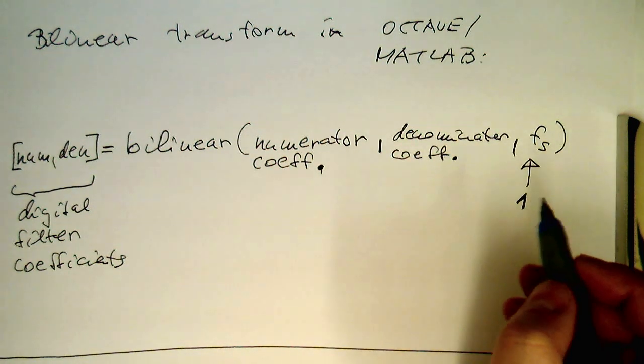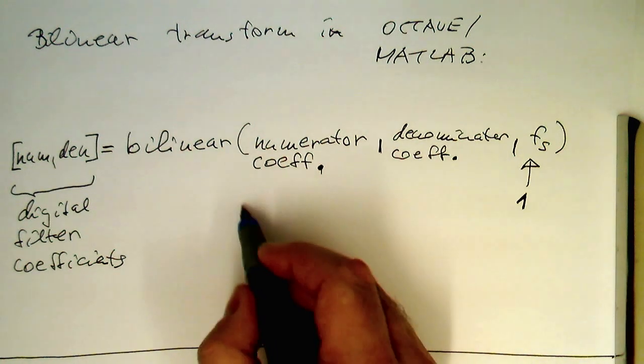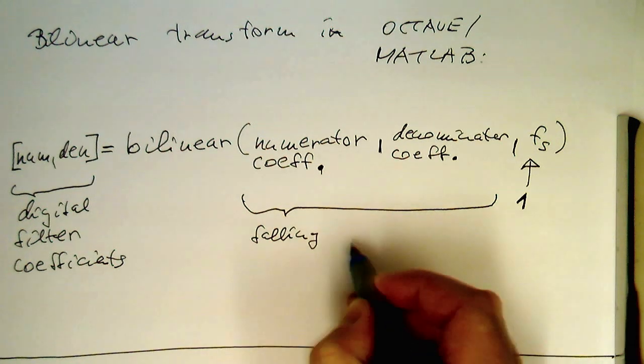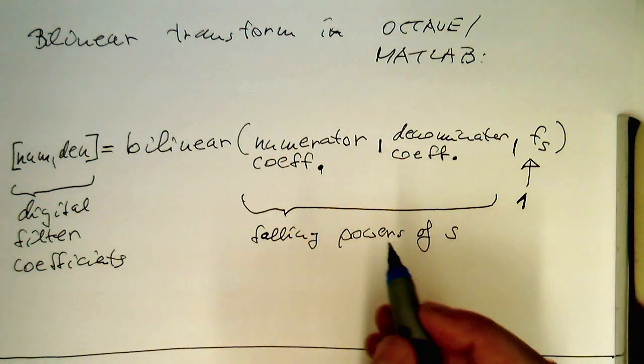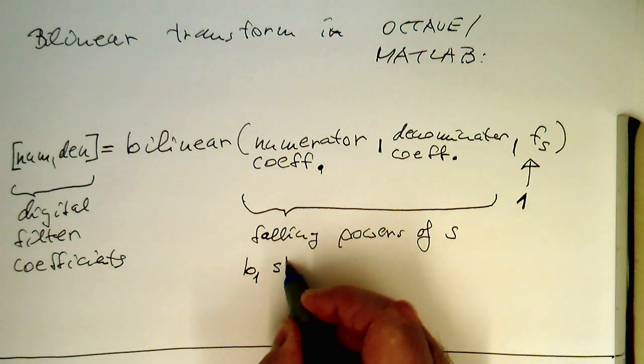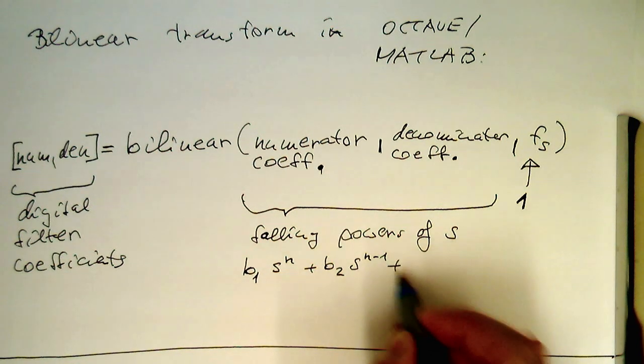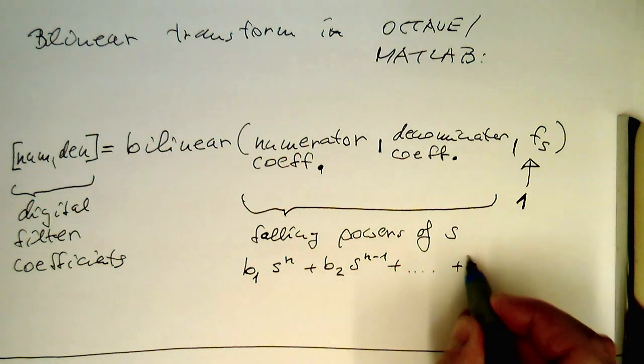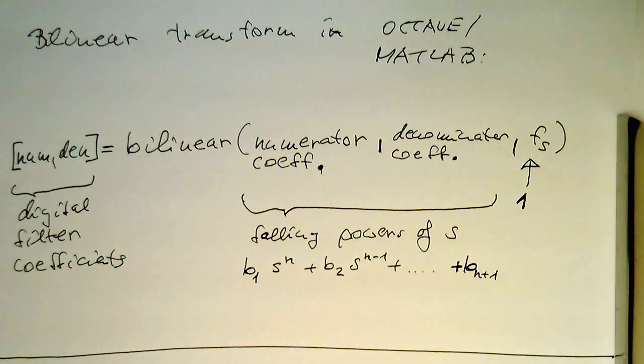So simple as that. The only pitfall is here that these analog coefficients here, they need to be specified in falling powers of s. So we need to be careful with that. So it starts something like with b1, and this is then s to n plus b2 s to n minus 1 plus, and so on. And then this obviously runs till here b n plus 1 without any s at the end.